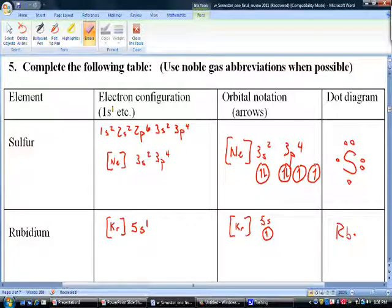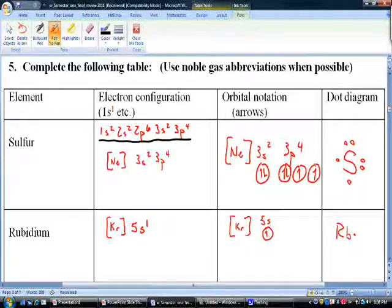So electron configuration notation - remember you can use the entire notation, like 1s² 2s² 2p⁶ 3s² 3p⁴ in this case, because that brings us up to the total number of electrons that are in sulfur.